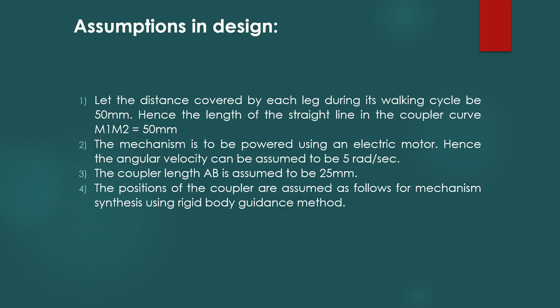Following are some of the assumptions made while synthesizing the mechanism. One, the distance covered by each leg during its walking cycle is assumed to be 50 millimeters. Hence, the length of the straight line in the coupler curve M1M2 is equal to 50 millimeters.